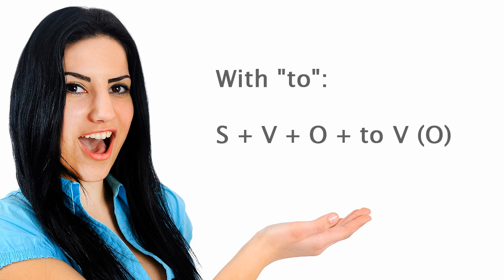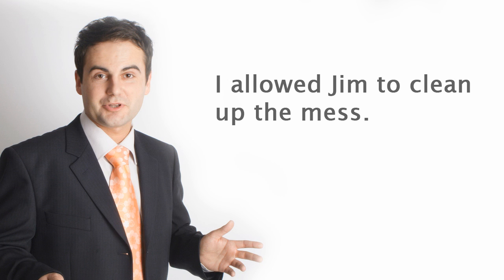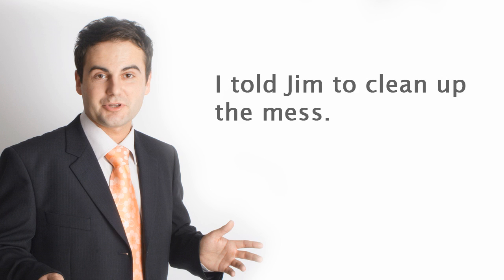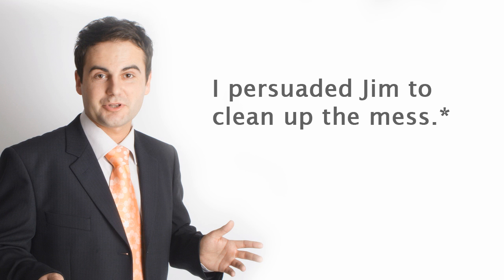With 'to.' The pattern is: subject plus verb plus object plus 'to' verb object. For example: I allowed Jim to clean up the mess. I asked Jim to clean up the mess. I told Jim to clean up the mess. I persuaded Jim to clean up the mess.